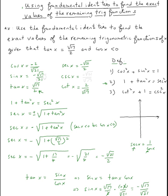Cosecant is just the reciprocal of sine, so cosecant of x equals negative square root of twenty-one over square root of seventeen. And that's it for this problem.